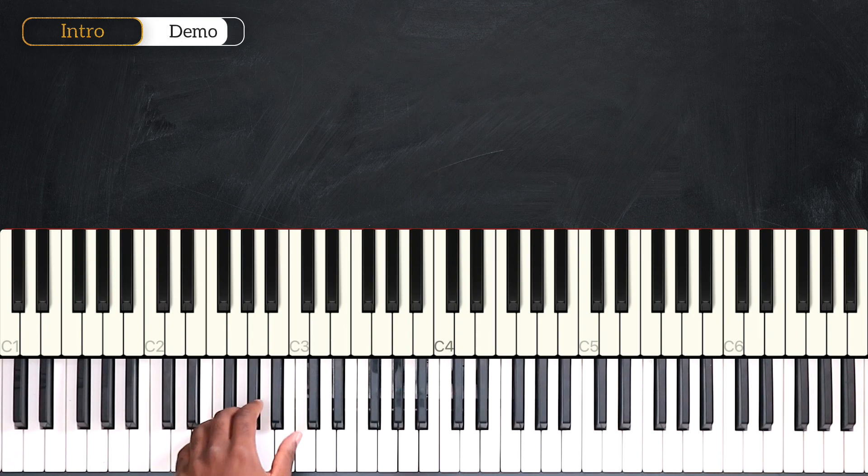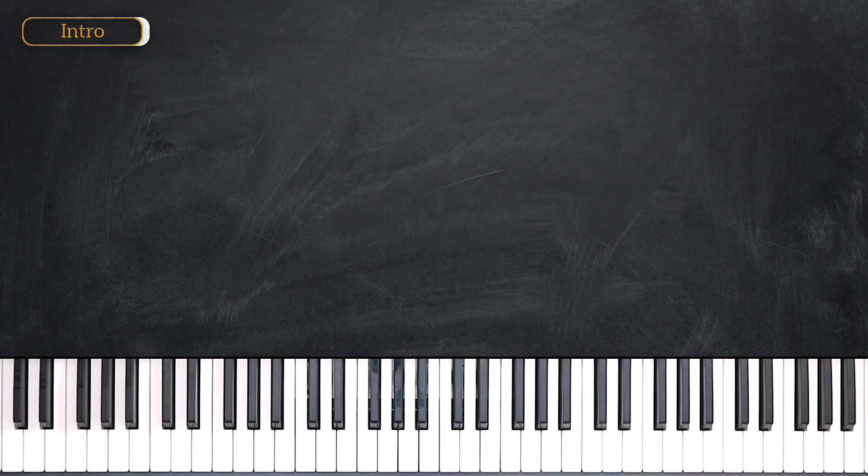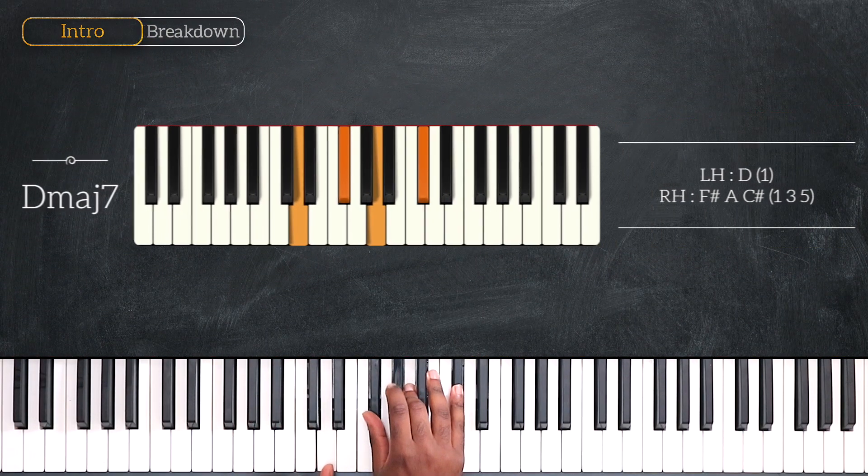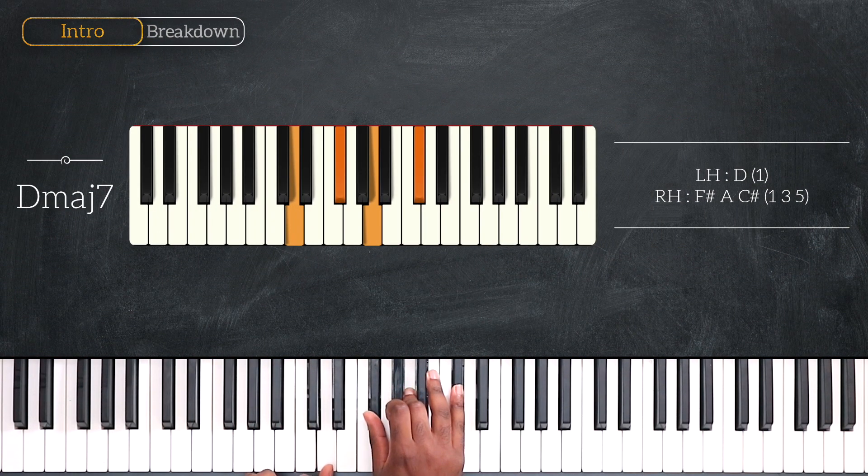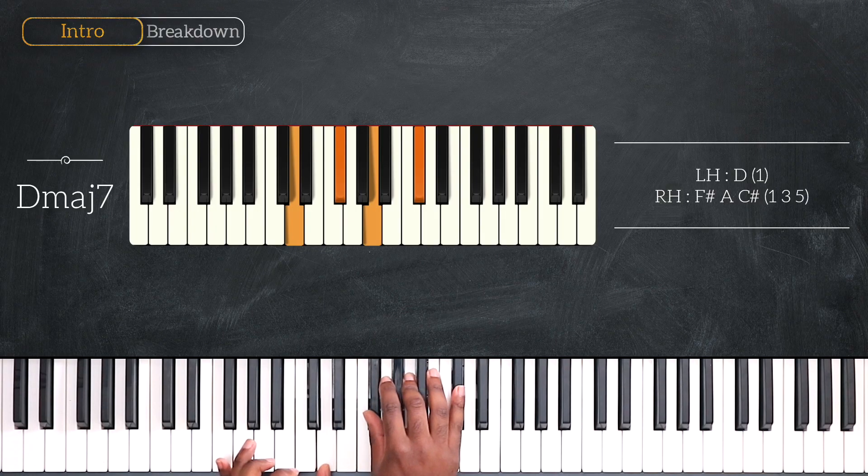So, for this first part I'm going to break down the intro of the song. We're playing here in the key of A and we're starting the intro with D major 7. Playing one note on the left, the root note D. F sharp, A and C sharp on the right hand.